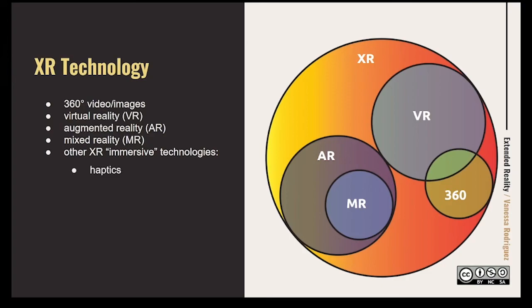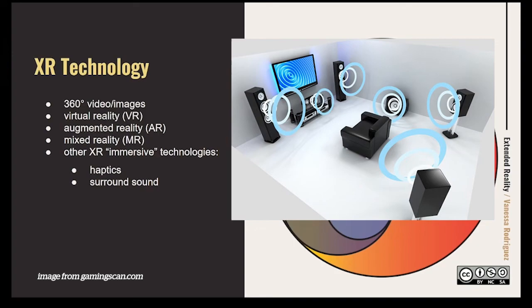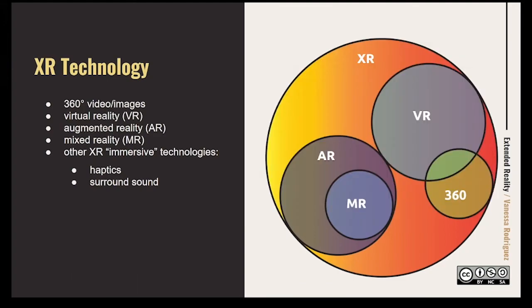One example is haptics — a wearable device that simulates something you might be experiencing in a digital environment like VR or AR, giving you a sensory feeling through clothing. Surround sound you might be familiar with from a movie theater, where speakers are placed in various parts of the theater so audio comes out of only one speaker to simulate that the sound is behind you or to the right. It gives the person the impression that audio is coming from one specific area.